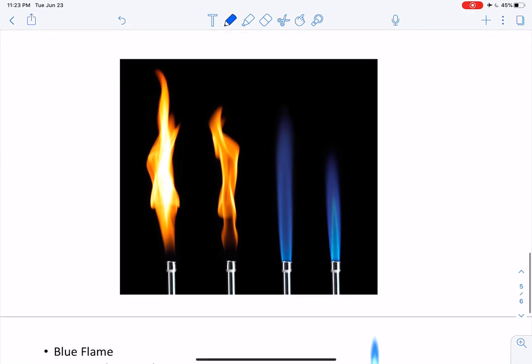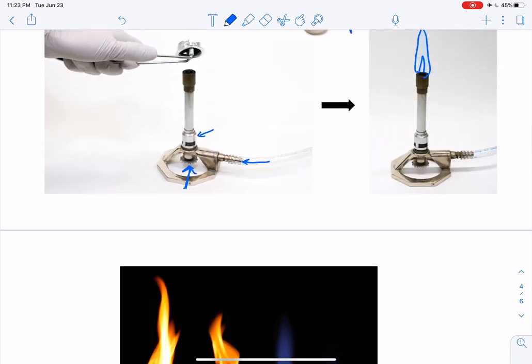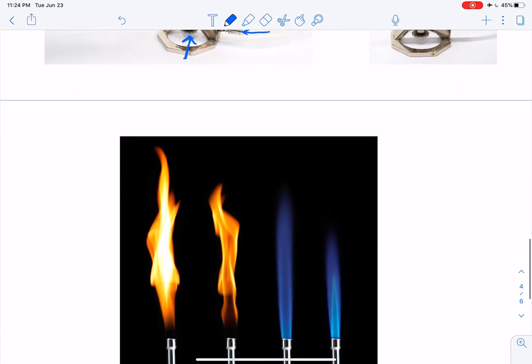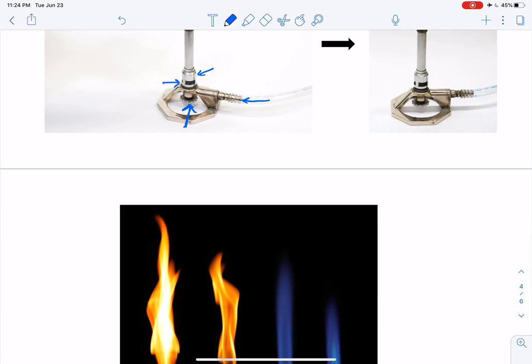Once we light our Bunsen burner, we get a lovely flame. If you've got the air vents closed, you'll have a yellow orangey flame. If you have the air vents open, you'll have a blue flame. If you think your flame is too high and you want it to go lower, you'll adjust the needle valve so that there's less gas coming in and you'll see your flame lower. If you wanted to go from your orange flame to your blue flame, you would grab the collar and rotate it so that you open up the air vent and get more oxygen in there.